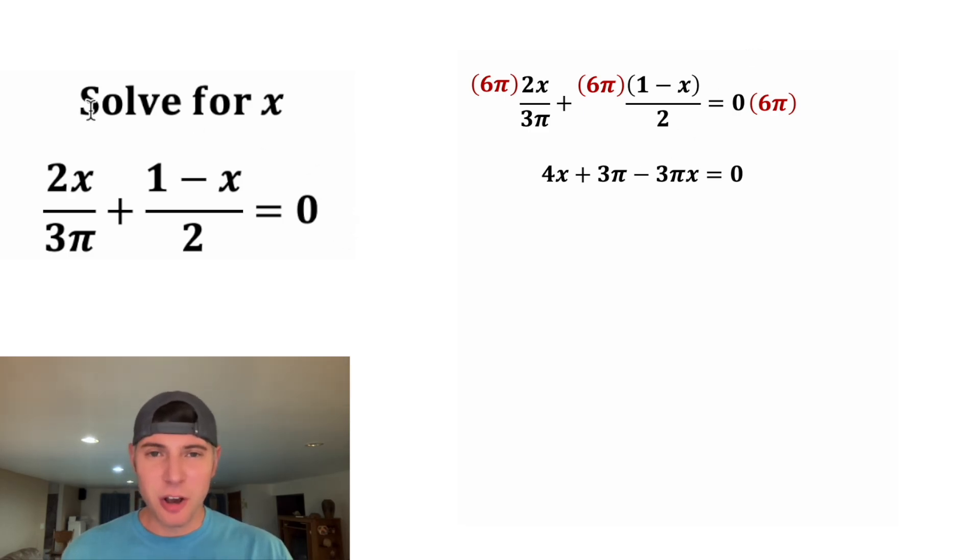Since we're trying to solve for x, we want all the terms that contain x on one side, and all the terms that do not contain x on the other side. So we want to move this 3π over to the other side. And we can do that by subtracting 3π from both sides. We can copy this down and simplify. 3π minus 3π will go to 0. And 0 minus 3π is negative 3π.